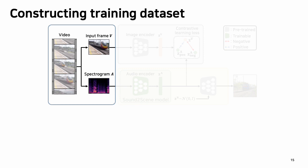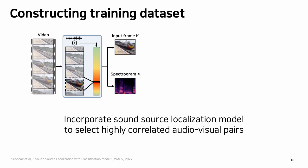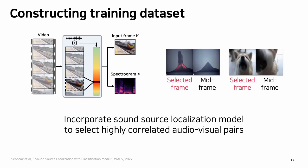To train the model, we need to construct the training dataset. We incorporate a sound source localization model to select highly correlated audio-visual pairs from video. As illustrated in these figures, the frames selected with our method contain more salient events compared to simply selecting the mid-frame of the video.